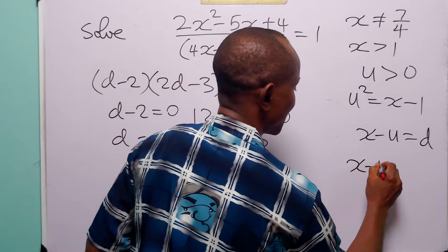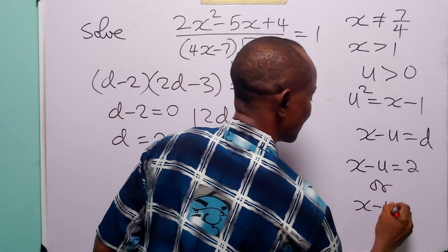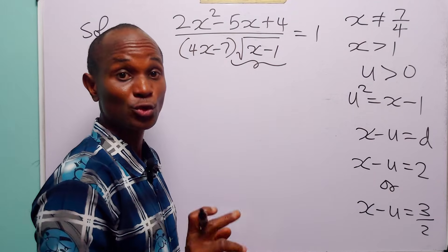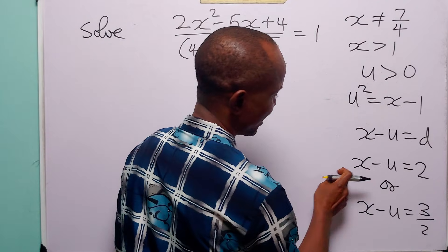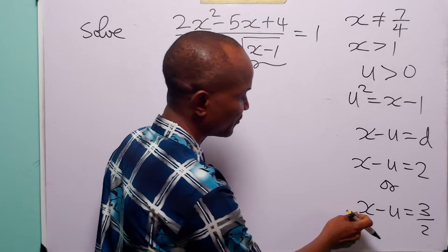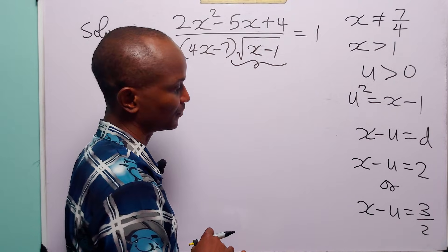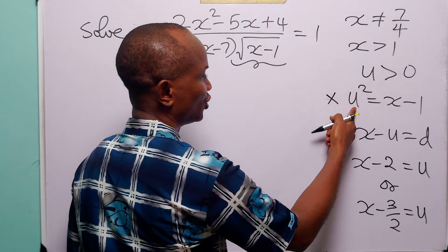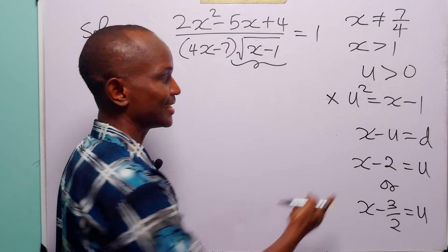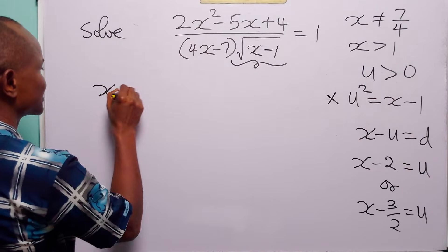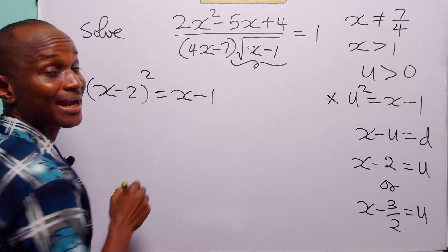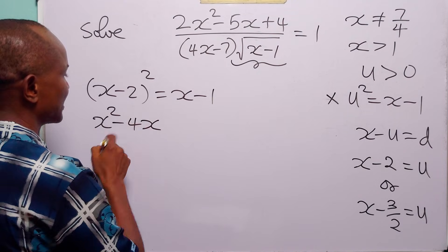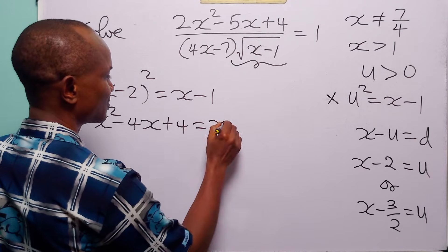So x minus u equals 2, or x minus u equals 3 over 2. Before we continue, let us rearrange these two equations and make u the subject. In the first case, x minus 2 equals u. In the second case, x minus 3 over 2 equals u. Now that we have an expression for u in terms of x, to find x we go back to u squared equals x minus 1. In the first case, x minus 2 squared is equal to x minus 1. Expanding: x squared minus 4x plus 4 equals x minus 1.